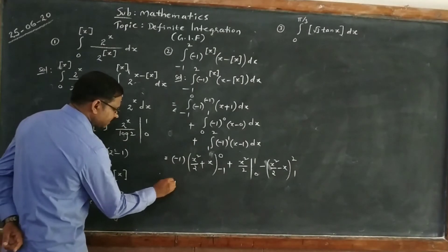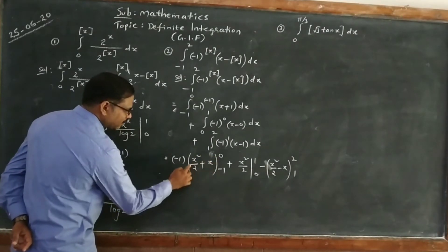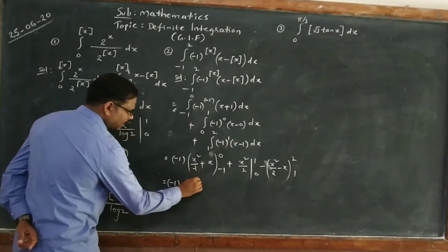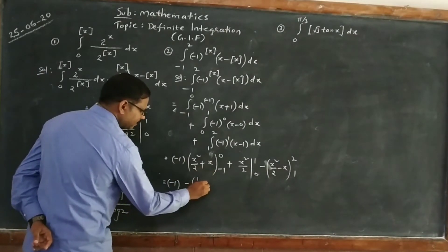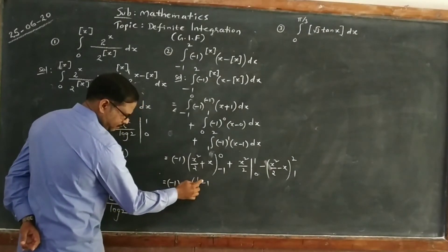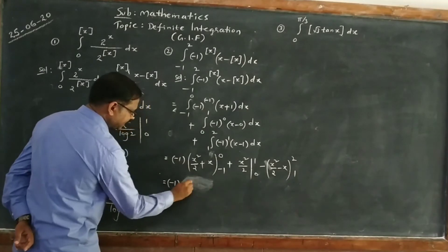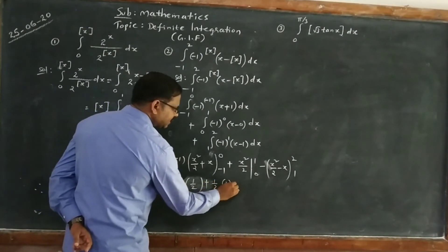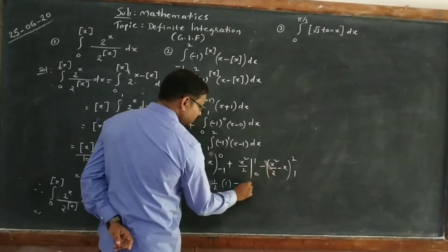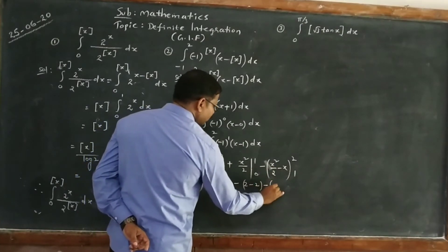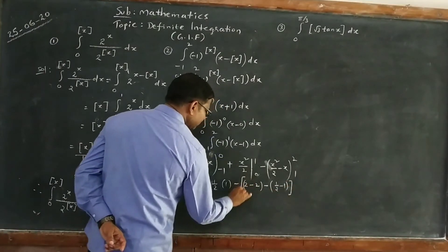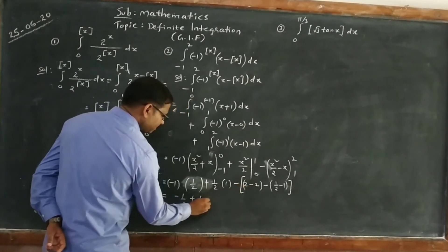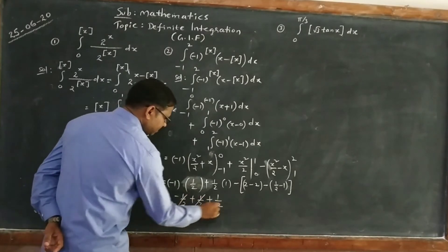Let us simplify. (-1) times [(0/2 + 0) - (1/2 - 1)] = (-1) times (-1/2) = +1/2. For the middle: 1/2 - 0 = 1/2. For the last part: (-1) times [(4/2 - 2) - (1/2 - 1)] = (-1) times [0 - (-1/2)] = -1/2. So: half + half - half = half. The answer is 1/2.